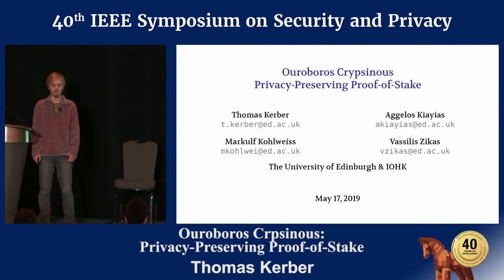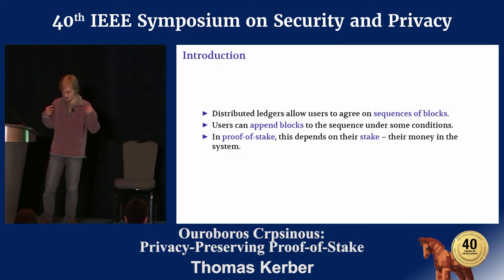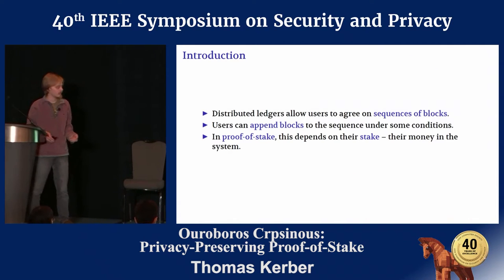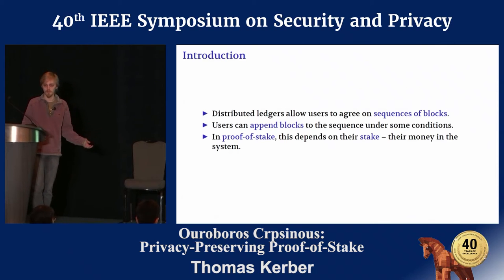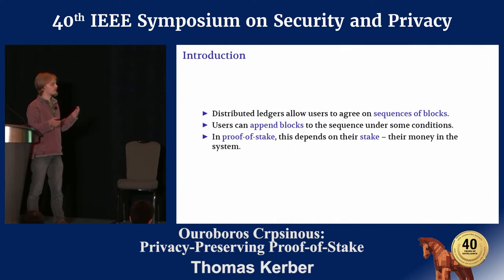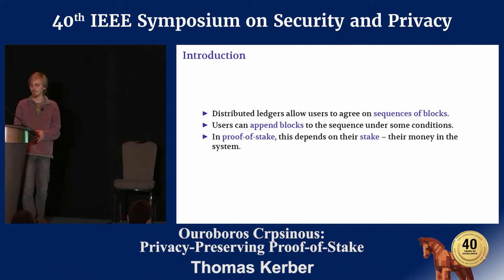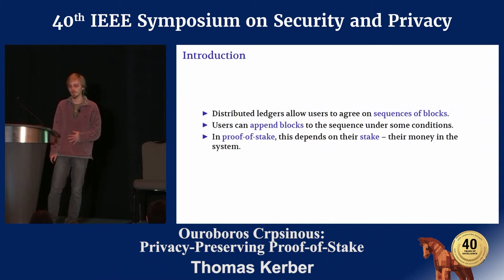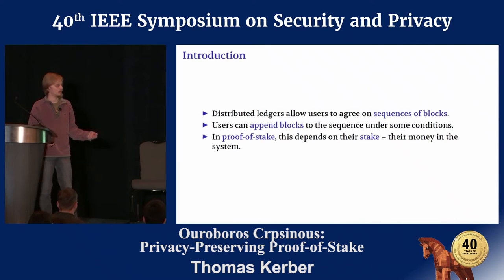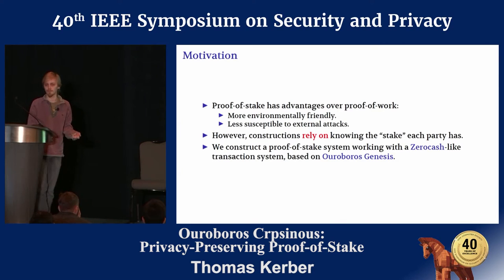I'll start with a bit of introduction to what proof-of-stake is and the motivation for why privacy in it is interesting. To remind ourselves what distributed ledgers are: essentially it's just a protocol which allows us to agree on a sequence of blocks, and users can occasionally append to this sequence if some conditions are satisfied. When we say proof-of-stake systems, we mean this condition depends on how much stake or value you hold within the transaction system.